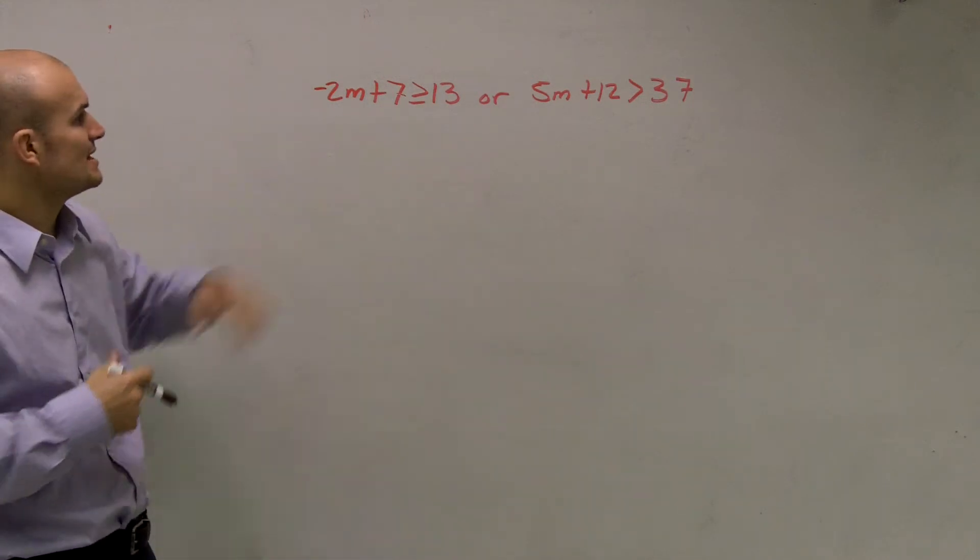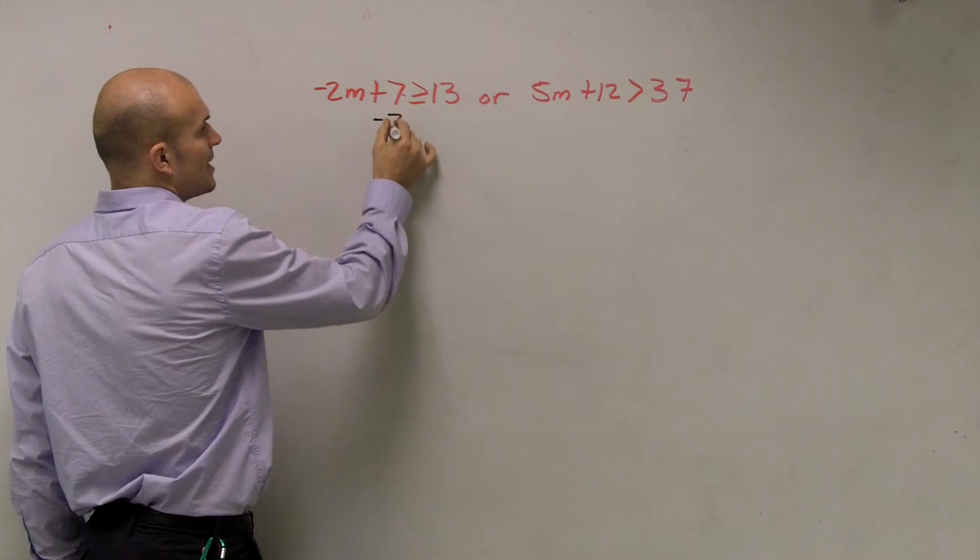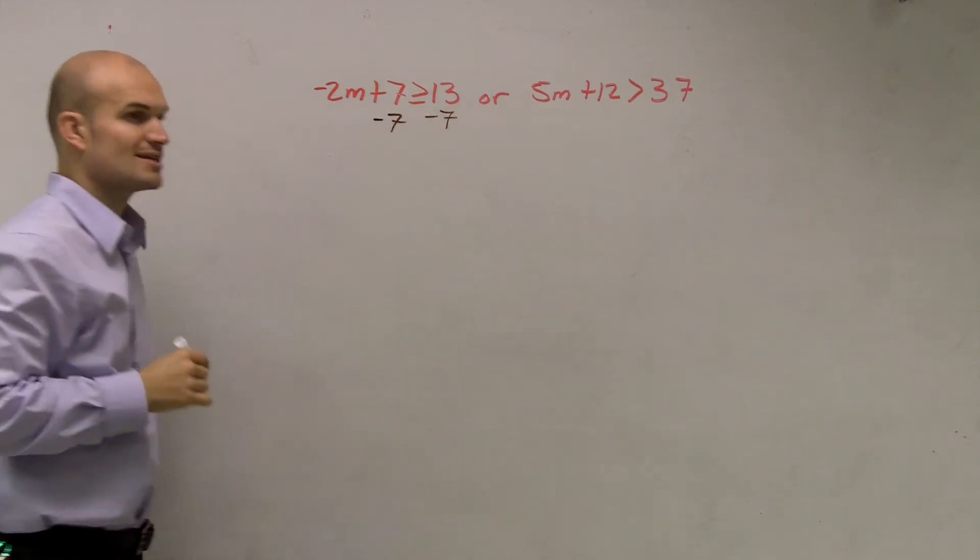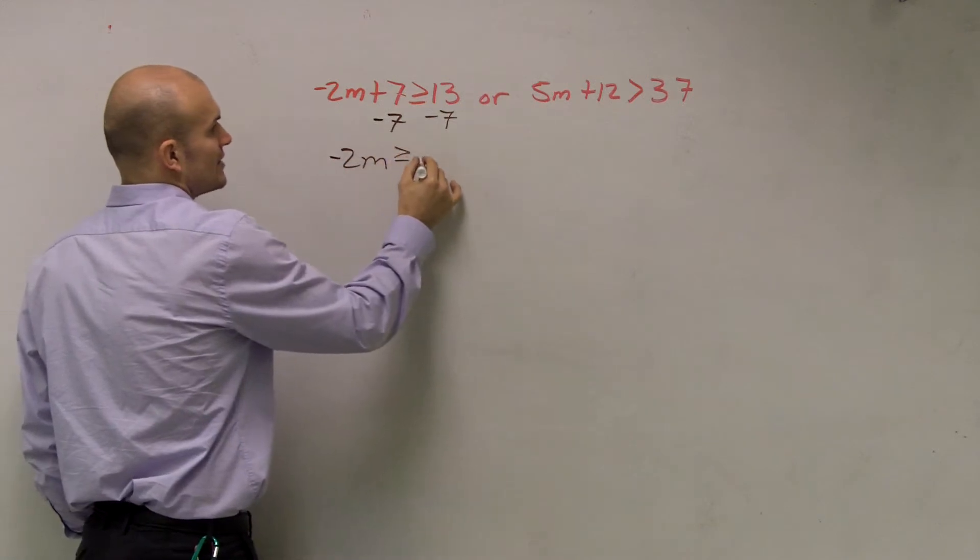So the first thing I'm going to do is negative 2m plus 7. To do this, I'm going to subtract 7 on both sides. I'm going to treat it just like an equation. Therefore, I have negative 2m is greater than or equal to 6.